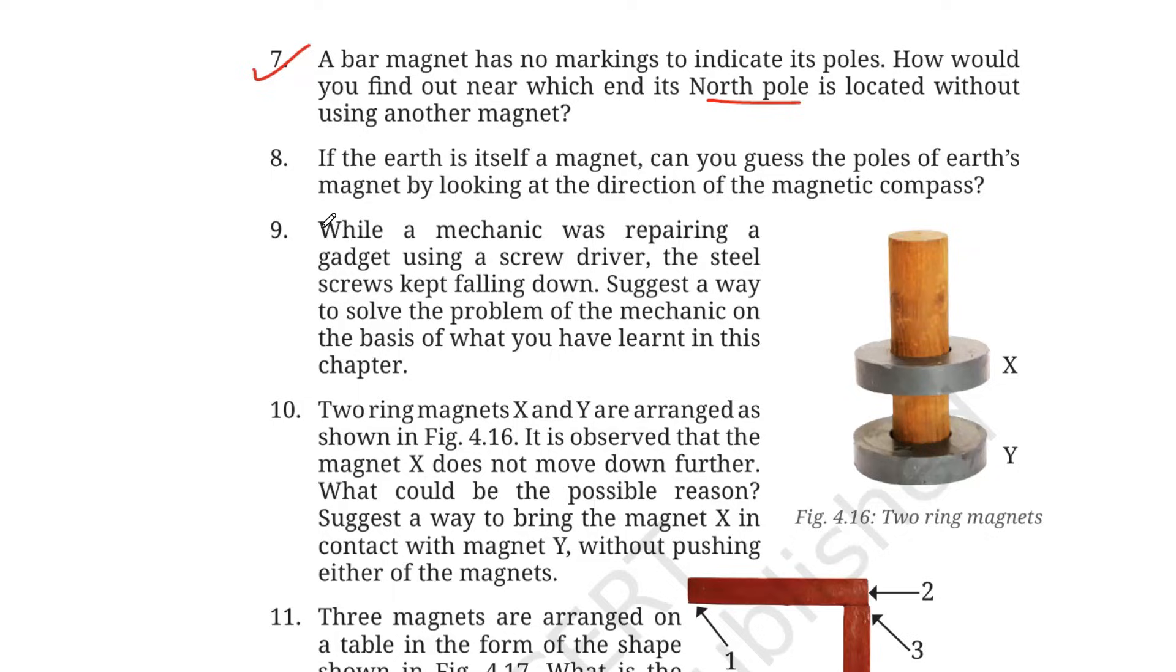Number 8. If the earth is itself a magnet, can you guess the poles of the earth's magnet by looking at the direction of the magnetic compass? Yes, absolutely we can find. The end of the compass needle that points towards the north direction is the north-seeking pole, which means geographic north pole of the earth is the magnetic south pole, and the geographic south pole of the earth is the magnetic north pole.